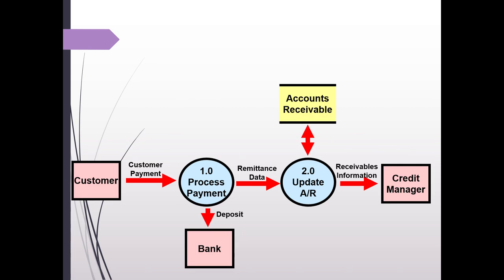So if we look at this payment process in a data flow diagram, we can see we have a data flow of the customer payment going from the customer, the data source, to a process. We have a deposit going out. We have a single flow remittance data going between the two processes and the receivables information going out. All these are one directional. Then we have a bi-directional arrow going to the accounts receivable data store. This is showing that you read in information from that data store and write information back.